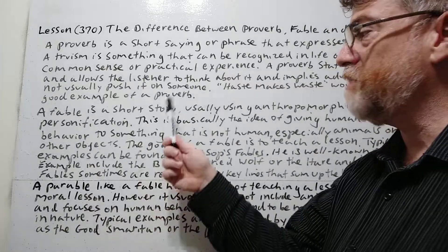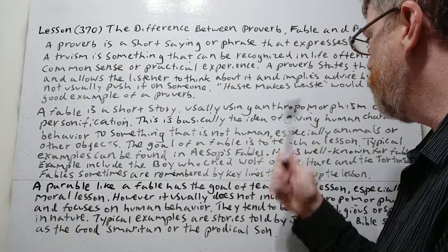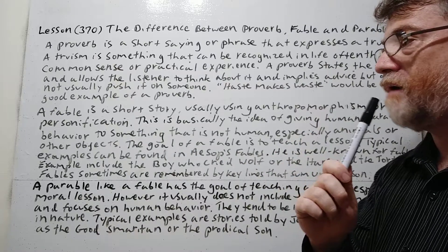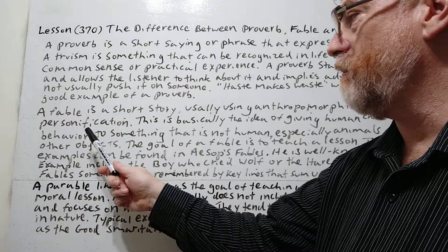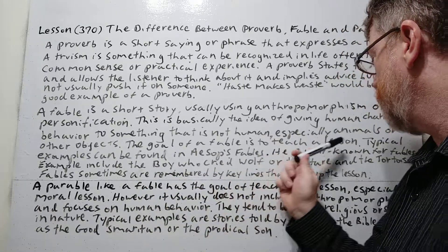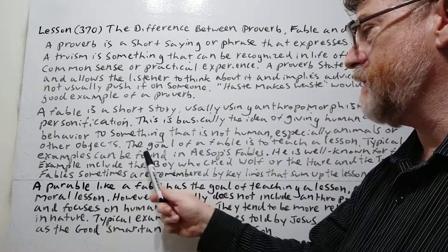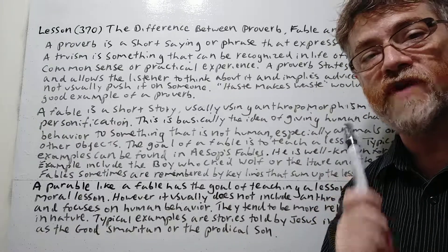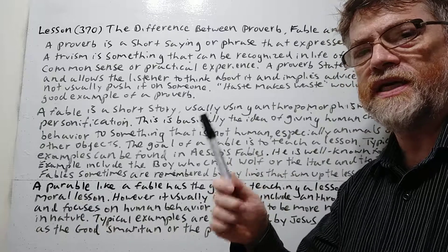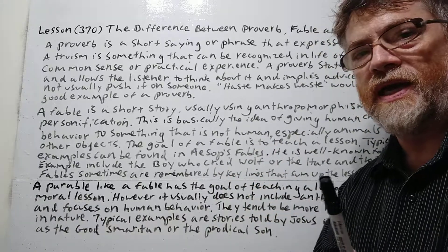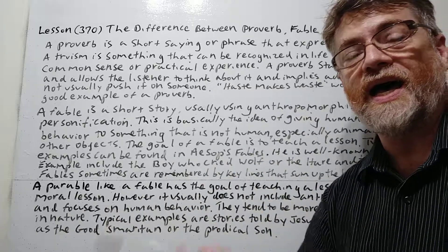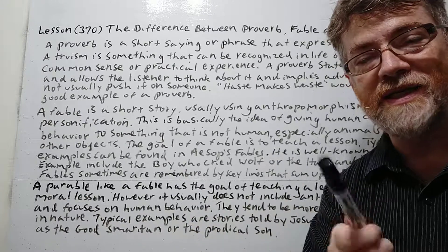A fable is a short story — it is a story — usually using anthropomorphism or personification. This is basically the idea of giving human characteristics or behavior to something that is not human, especially animals or other objects. The goal of a fable is to teach a lesson. Aesop is probably the most famous example. He used to be a slave and purposely didn't want to use real identities, so using animals was a way of hiding what he was talking about while still teaching a lesson.